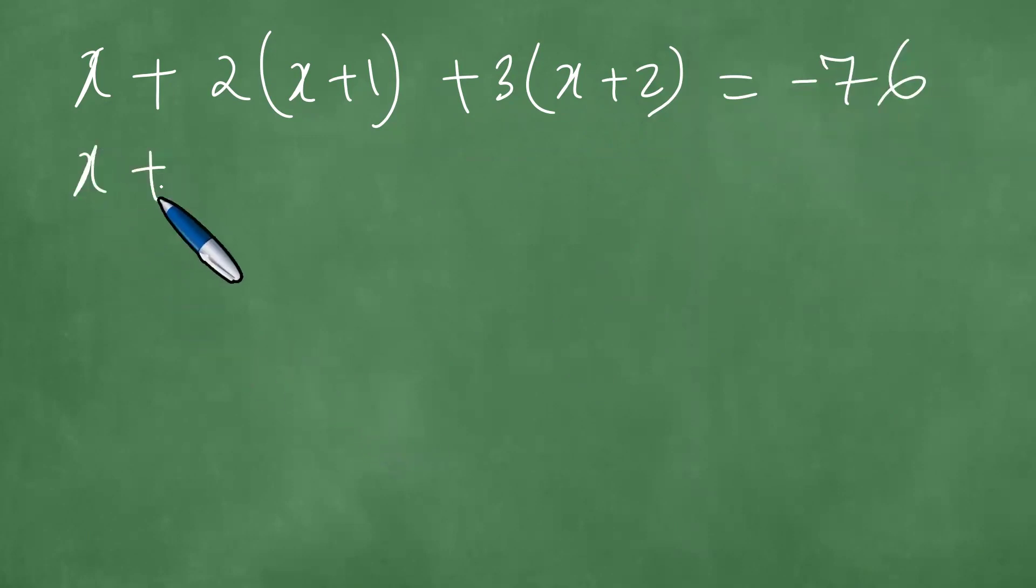Dealing with these, you have x plus twice x plus two, plus three x plus six, equals minus 76.